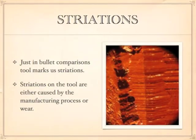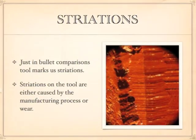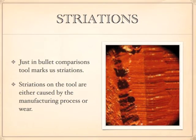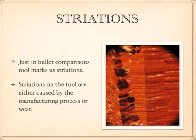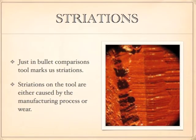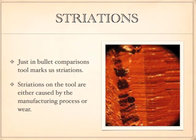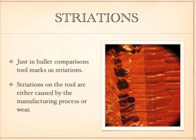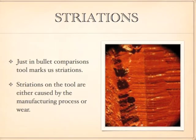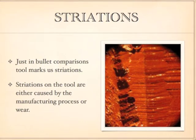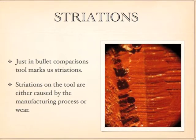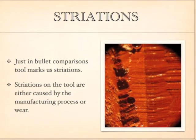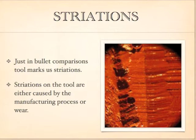When we are comparing tools to an impression, just as in bullets, we use the striations caused by the tool as our point of reference. Striations on the tool are either caused by the manufacturing process or wear. As you can see in this picture, the striations match up across the two halves of the picture.